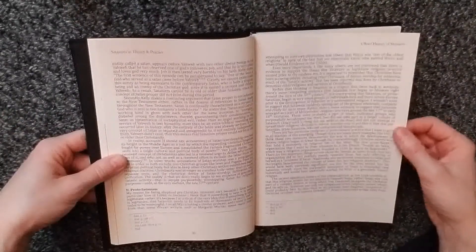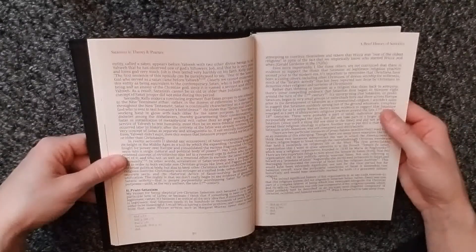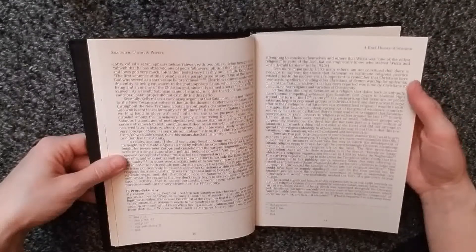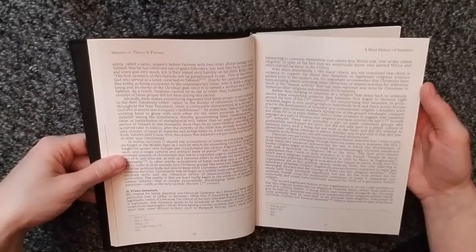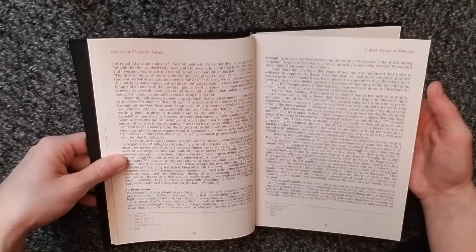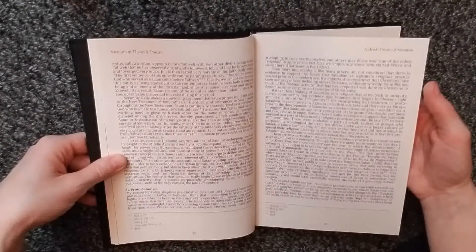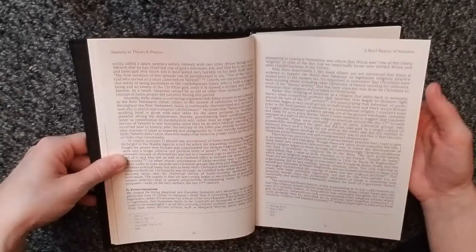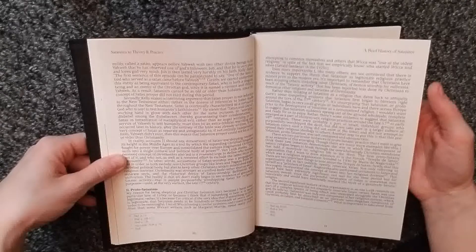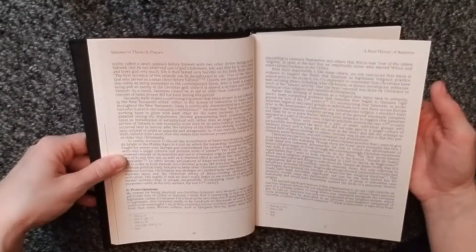It's important to remember that Christians have been accusing others, including other Christians, of demon worship for millennia. Much of the satanic activity that has been reported was done by Christians to demonize other religions and varieties of Christianity. Rather than thinking of Satanism as a religion that dates back to antiquity, there's some compelling evidence that Satanism first began to blossom right around the turn of the 17th century.